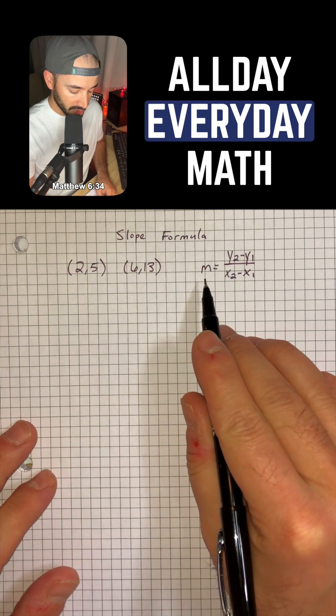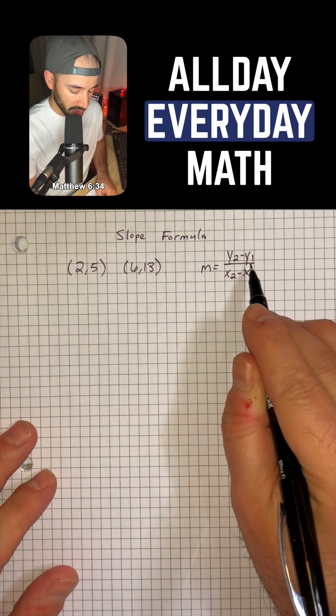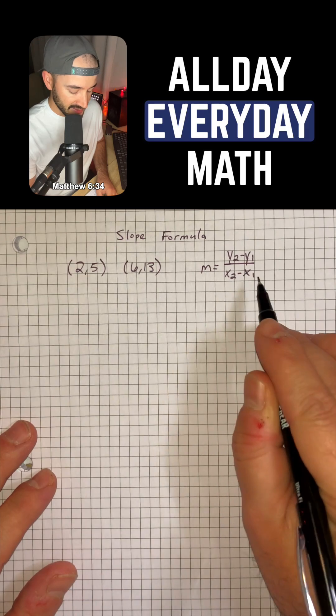So the slope formula is m equals y2 minus y1 over x2 minus x1.